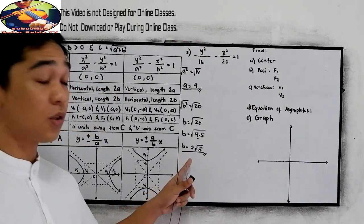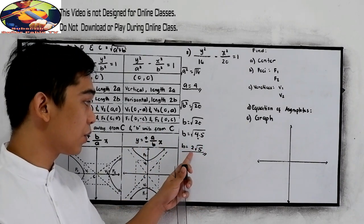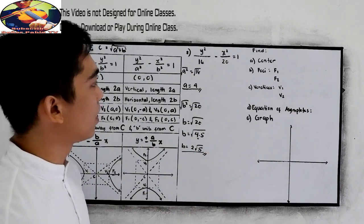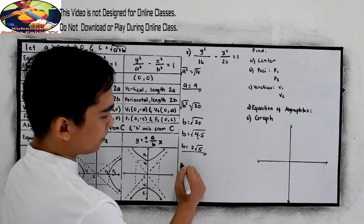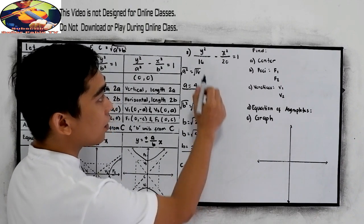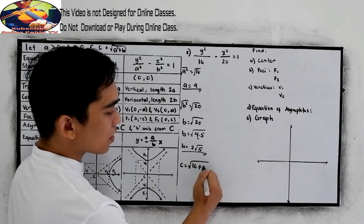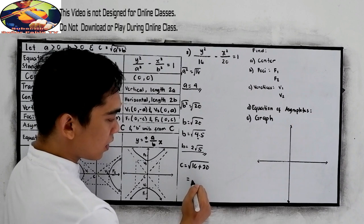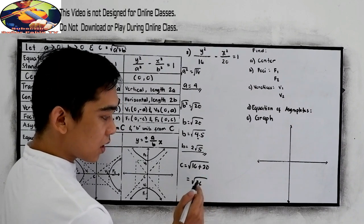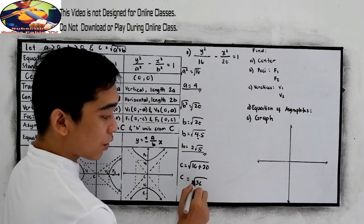This must be positive or negative 2 square root of 5. But since we are looking for the distance, we're just going to use the positive 2. For our c, c is equal to square root of 16 plus 20, which is square root of 36. 20 plus 16 is 36, so c is 6.